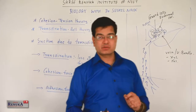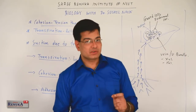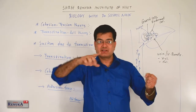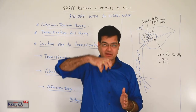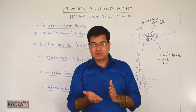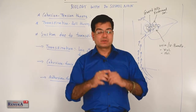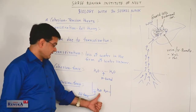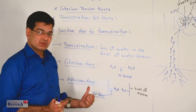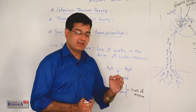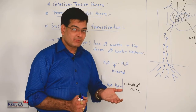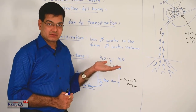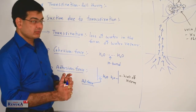Cohesive force and adhesive force play a significant role here. Due to cohesive force, water molecules remain attached to each other from all sides within the xylem vessel. When a pull develops from the upper side due to transpiration, the entire water column moves upward. Due to adhesive force, water molecules remain adhered to the wall of the xylem, ensuring water always moves upward and never falls back down from whatever height it has reached.